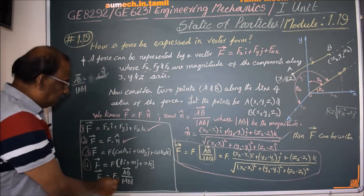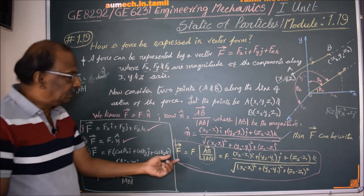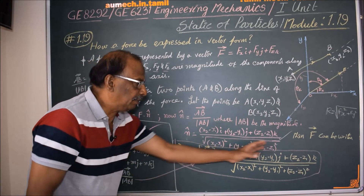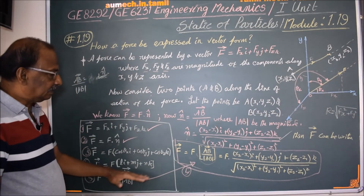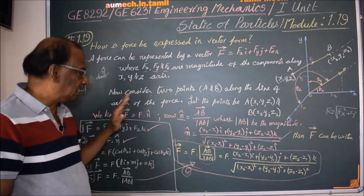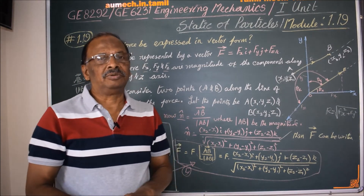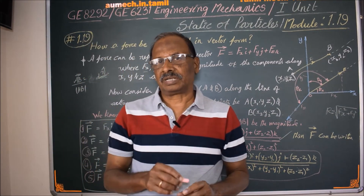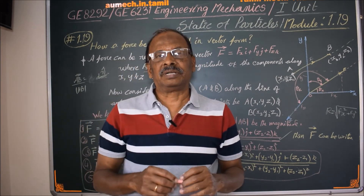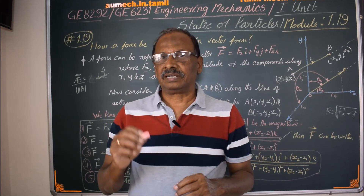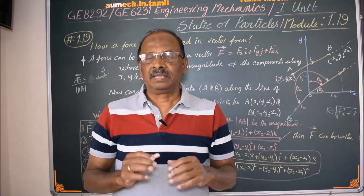The third method is F into AB, where the denominator is the modulus of AB. Now I'm going to move to the next calculations in the subsequent module. If you want to subscribe to the channel, you can click the bell icon to receive regular reminders.